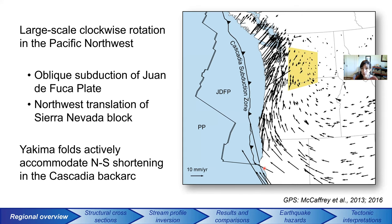The Yakima Folds are located in the back arc, highlighted in this yellow area. We've got north-south shortening. Based on the geodetic rate, it seems to be about two millimeters per year across this broad region, accommodated along the folds and faults. It's a fairly slow strain environment, so identifying individual fault slip rates from the GPS is really quite difficult. So we turn to geology, geophysics, and geomorphology to answer those questions.